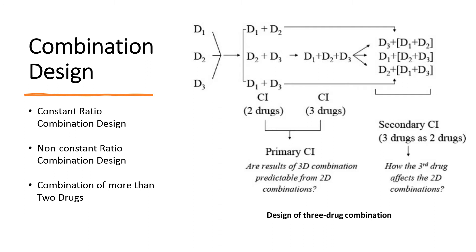For example, D1 plus D2 can be synergism, D2 plus D3 can be antagonism, and so on. Whether D1 plus D2 plus D3 is synergism or antagonism can then be calculated directly with or without component dissections. For the combination of more than three drugs, the same principles and rules apply.